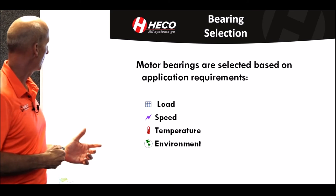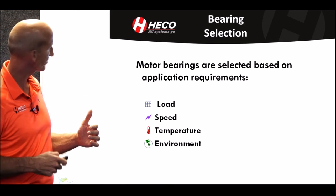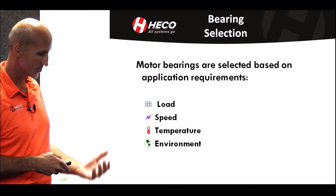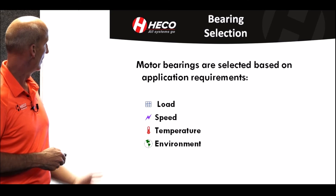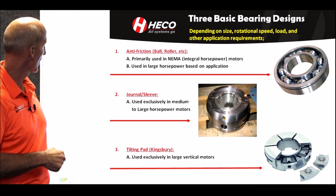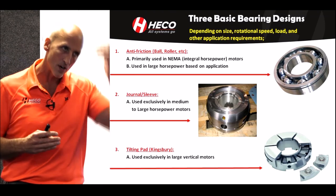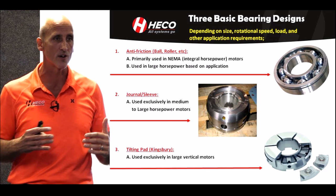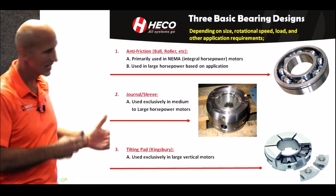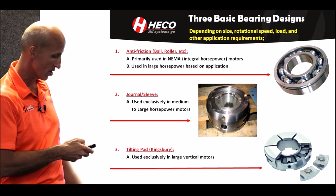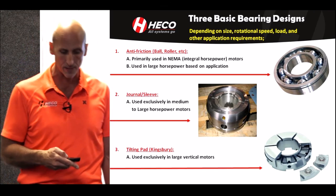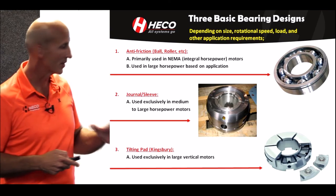Typical bearing types — bearings are selected based essentially on load, speed, temperature, and environment. The designer uses all that to decide the bearing system for the motor. Typical bearings include the antifriction ball bearing and the sleeve bearing. Antifriction bearings can be used up into higher horsepowers, but typically drop off around 1,000 horsepower, where you move into a sleeve bearing. Larger horsepowers are going to have sleeve bearing motors. Large vertical motors typically will have what we call a tilting pad or King's bearing, along with other bearing design types.